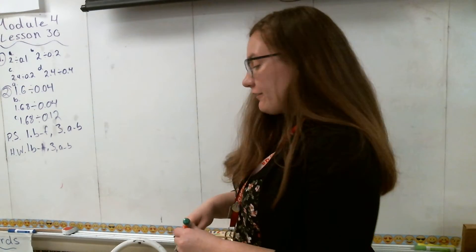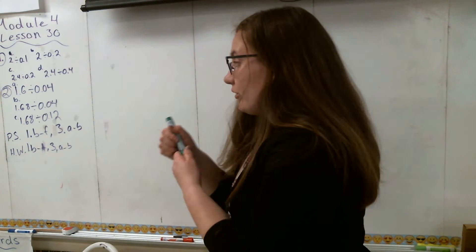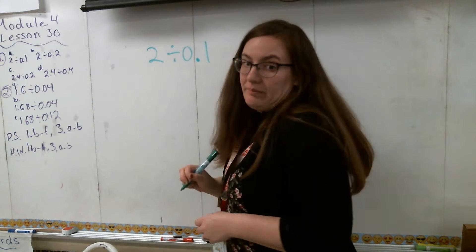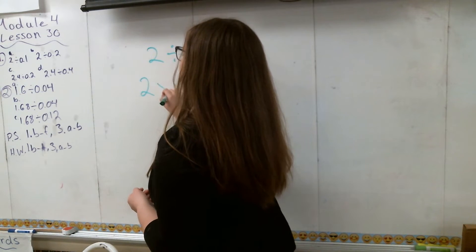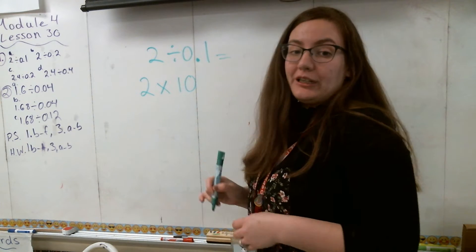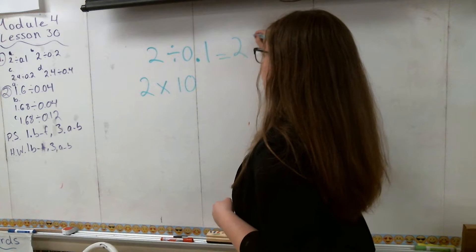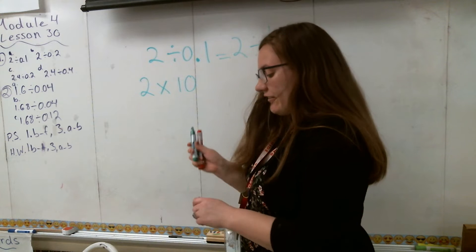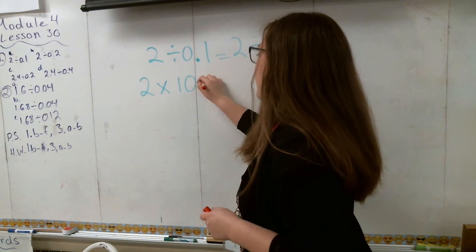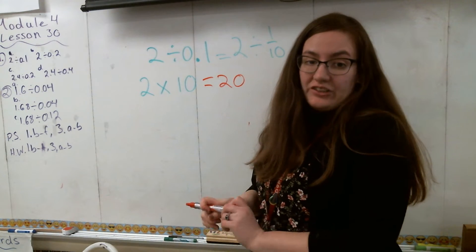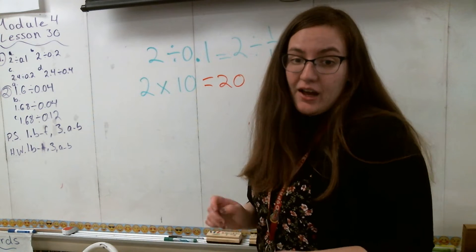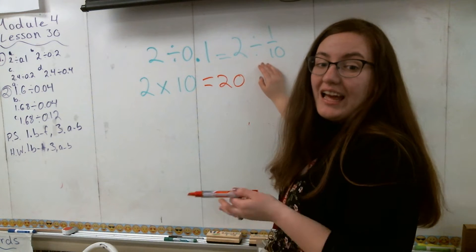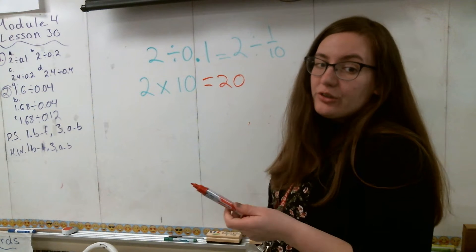For the first problem we're just going to take a look at a basic problem that we already know how to do. For example, if I have 2 divided by 0.1, I know that I can think of this as 2 times 10, because in the previous lesson we talked about how I can think of this as 2 divided by a tenth and then flip that into a multiplication problem. So 2 times 10 gives a final answer of 20. However, it's not going to be as easy now because we're going to have slightly different decimals.